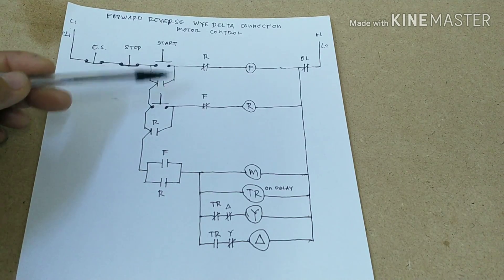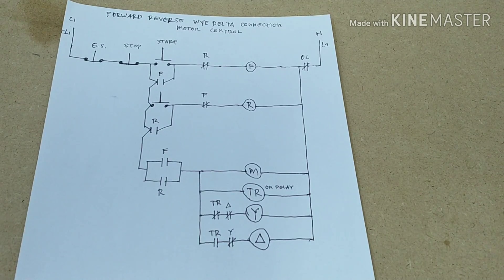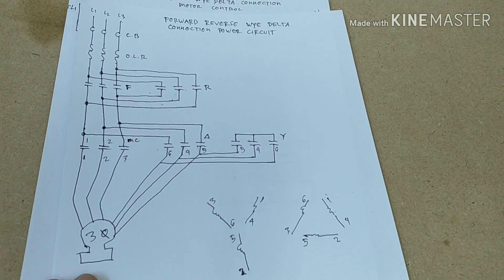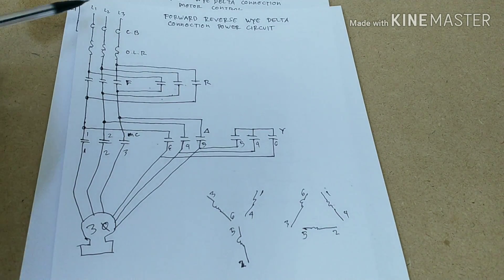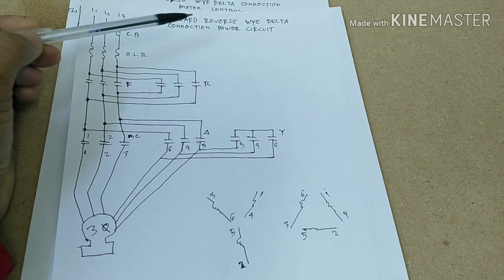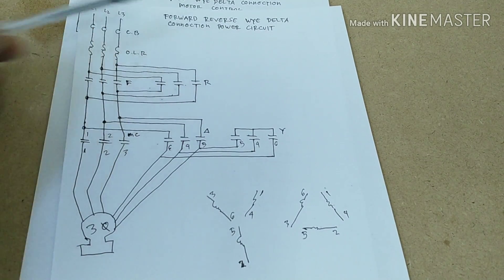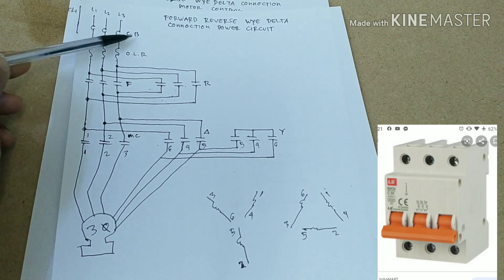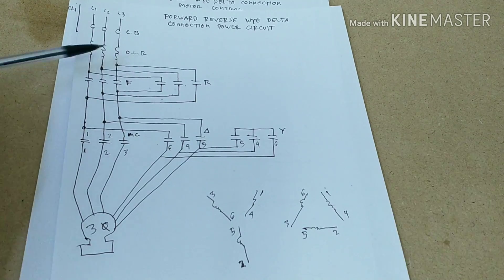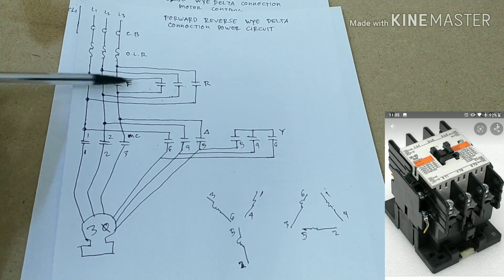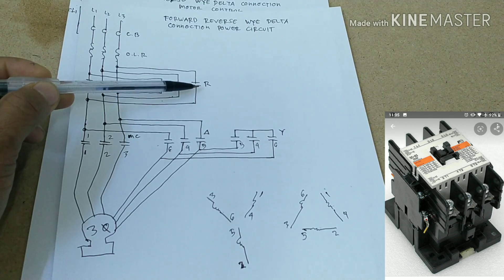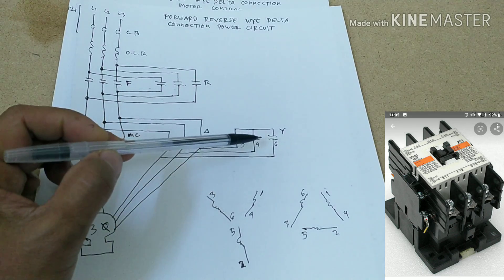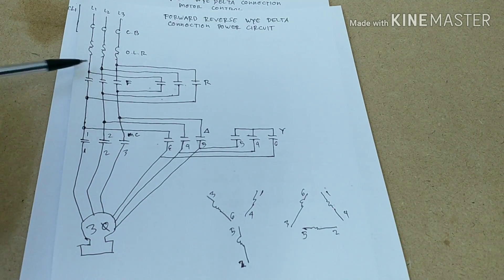Now let's proceed to the power circuit. This is our forward-reverse Y-delta connection power circuit. This is Line 1, Line 2, and Line 3. This is our circuit breaker. This is our overload relay. This is our forward contactor, this is our reverse contactor, this is the main contactor, this is the delta contactor, and this is the Y contactor.